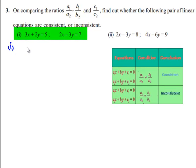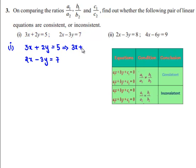The first set of linear equations given is 3x plus 2y equals 5 and 2x minus 3y equals 7. So this equation can be written as 3x plus 2y minus 5 equals 0 and the second equation can be written as 2x minus 3y minus 7 equals 0.